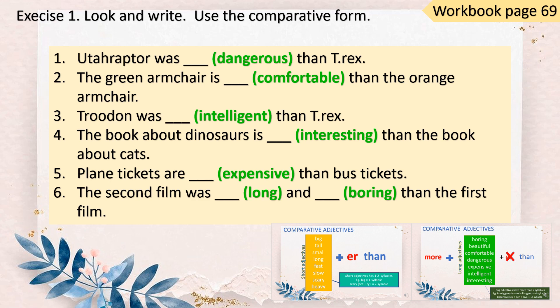For your exercise, you can try workbook page 69, Exercise 1. You have six sentences with the adjective given: dangerous, comfortable, intelligent, interesting, expensive, long, and boring. Remember, you have to know which ones are short and which ones are long. The short ones, you put -ER. The long ones, you cannot put -ER, but you have to use 'more'.